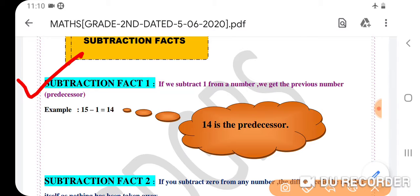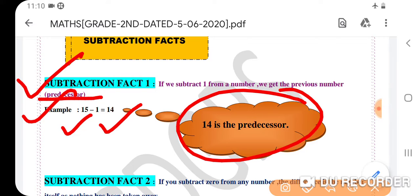If we subtract 1 from a number, we get the previous number, known as the predecessor. Look at the example: 15 minus 1 equals 14. So 14 is the predecessor of 15 and 14 is the difference for 15 minus 1.